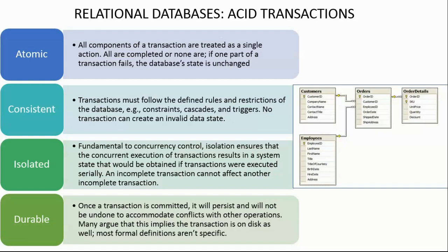The goal of ACID constraints is to maintain a very high level of data integrity. All these checks and balances are going to take a lot of time, and that is exactly why you cannot have large volumes of data stored in relational databases. If you try to do five different joins of several tables to get a million records, that will take a very long time because the tables are normalized. If you try to update one million records, that's going to take even longer.